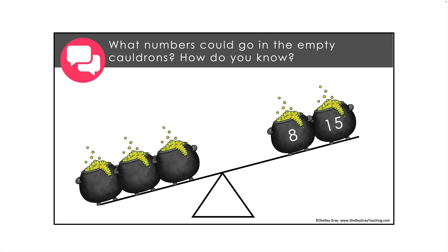Here's another example of one that has no correct answer. What could we discuss with this slide? We could discuss that the left side is going to be less than the right side — we can see that from the balance scale — and there are a lot of different options for which numbers could go into the cauldrons.